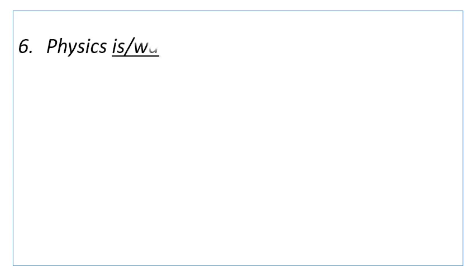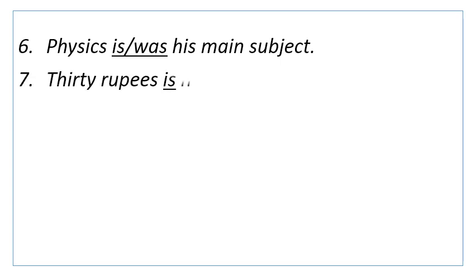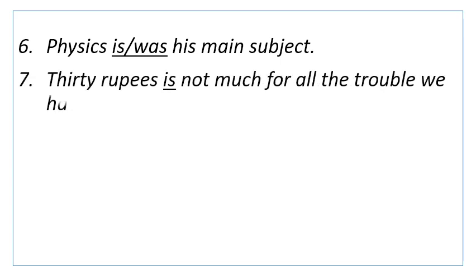Number 6: Physics—his main subject. Answer is, is or was. Reason is, some nouns which are plural in form but singular in meaning take a singular verb. Number 7: 30 rupees—not much for all the trouble we have taken. Answer is, is. Reason is, when a plural noun denotes some specific quantity or amount considered as a whole, the verb is generally singular.